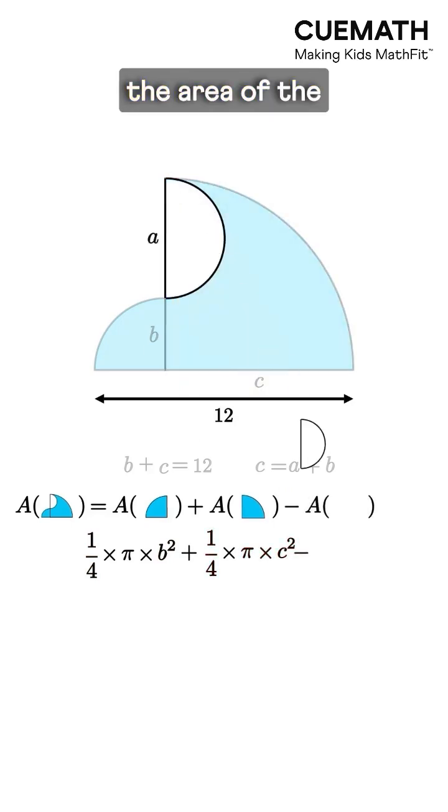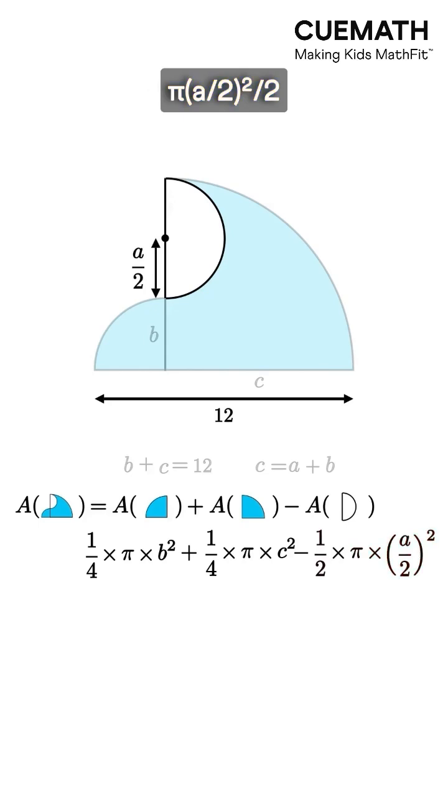Minus the area of the semicircle, pi times A over 2 squared over 2, or pi times A squared over 8.